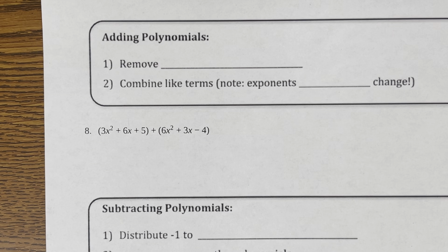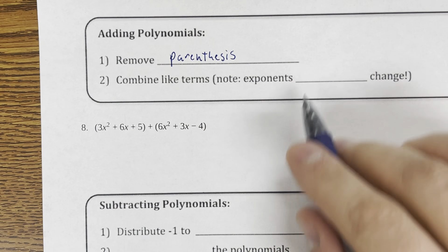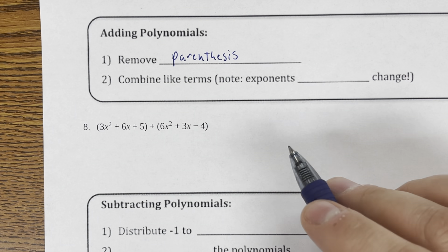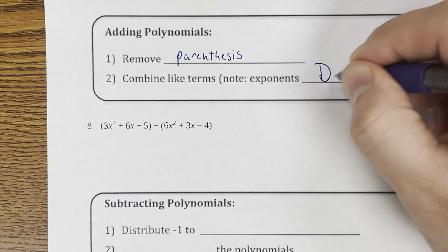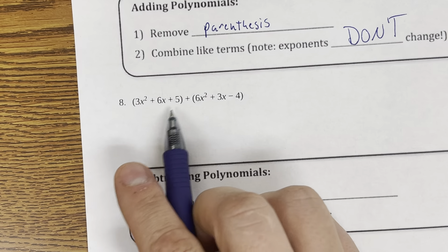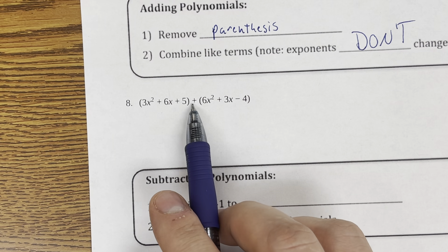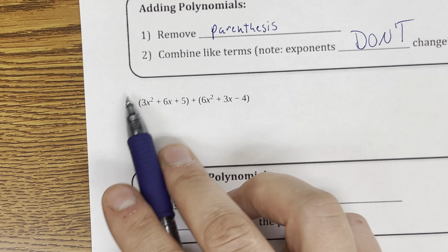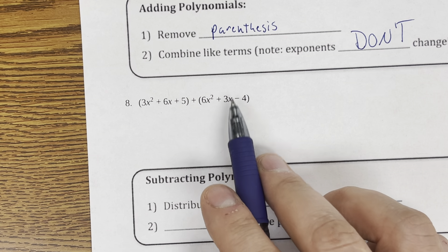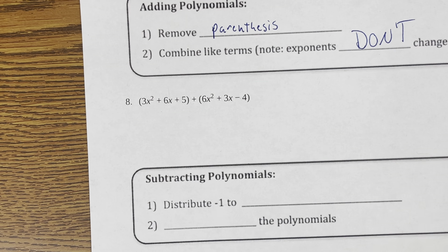To add polynomials, pretty much all we have to do is remove the parentheses and then combine the like terms. When we combine like terms — adding or subtracting — the exponents don't change. So 5x squared plus 6x squared is just 11x squared, and 2x plus 3x is 5x. When adding, I don't need to rewrite the problem to remove parentheses — I can see I'm adding and nothing's going to change.